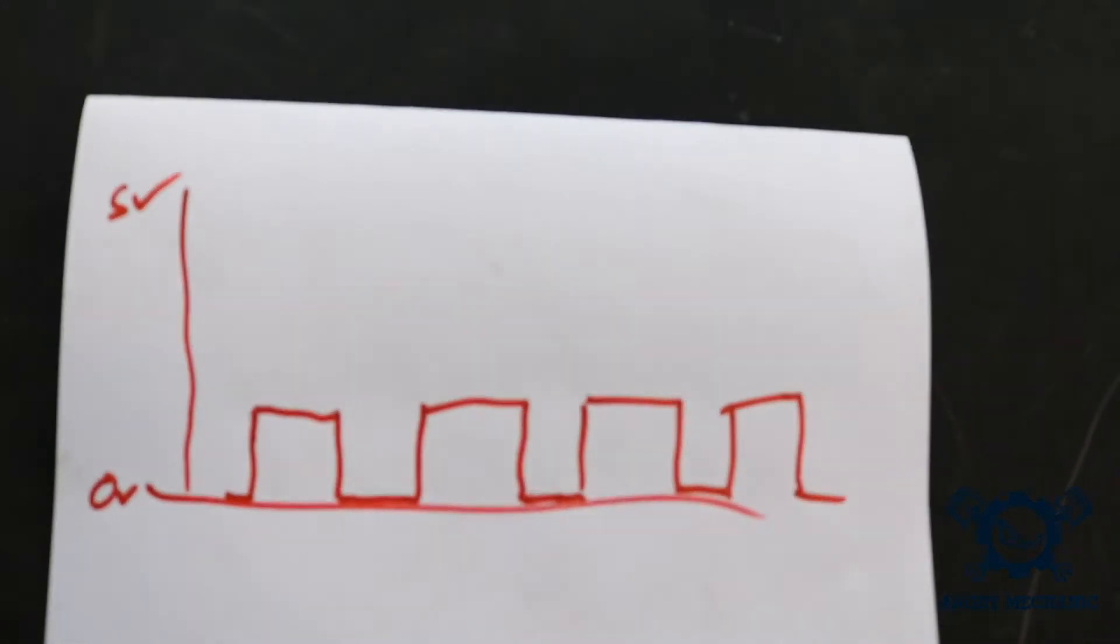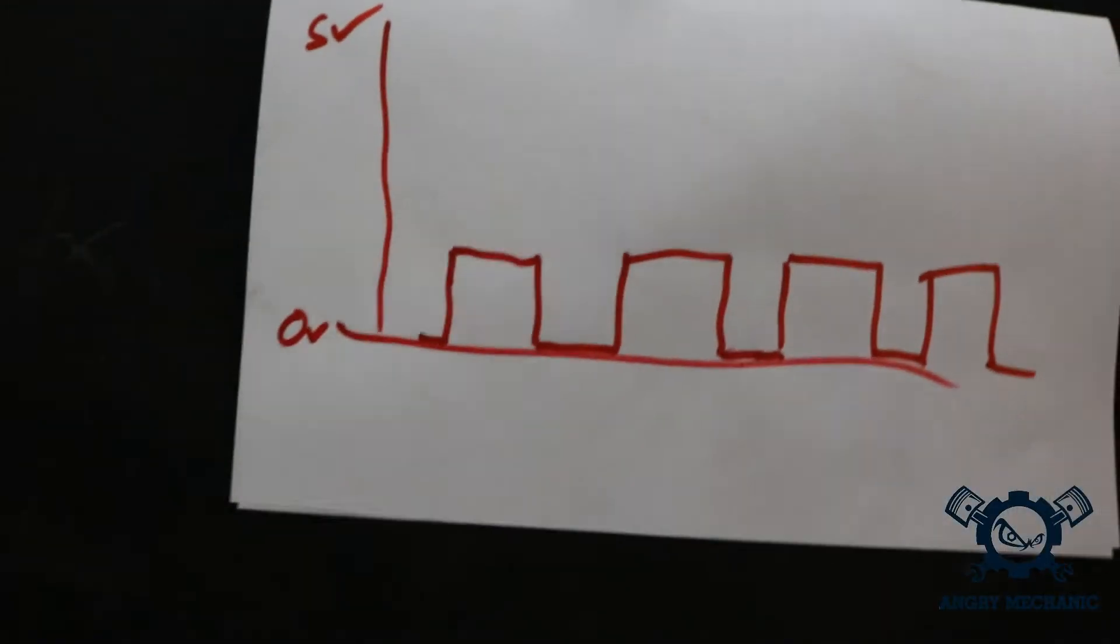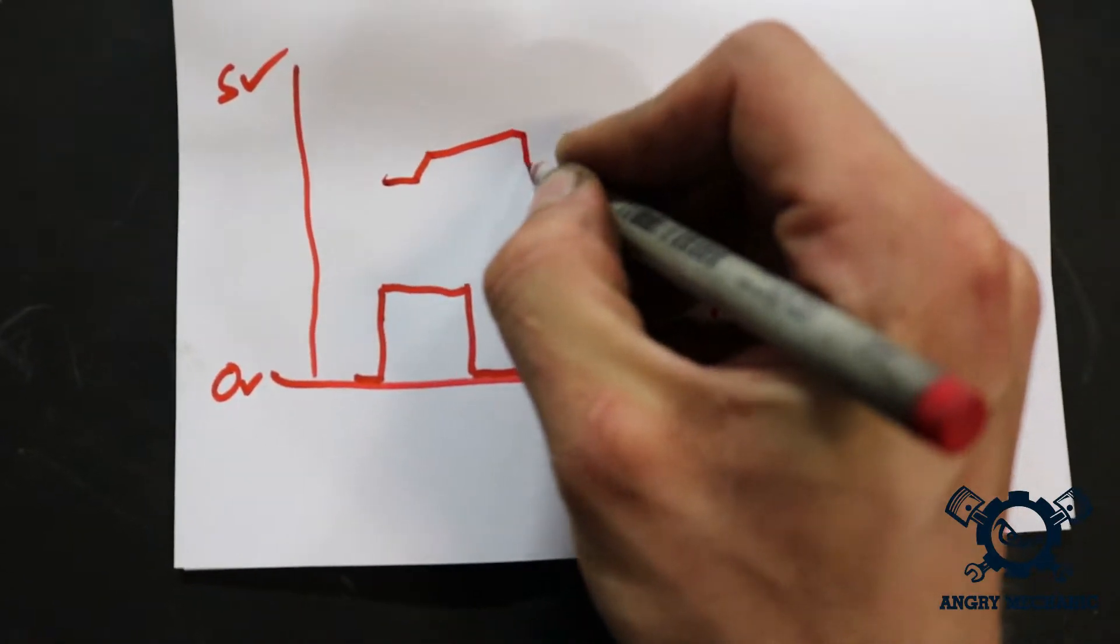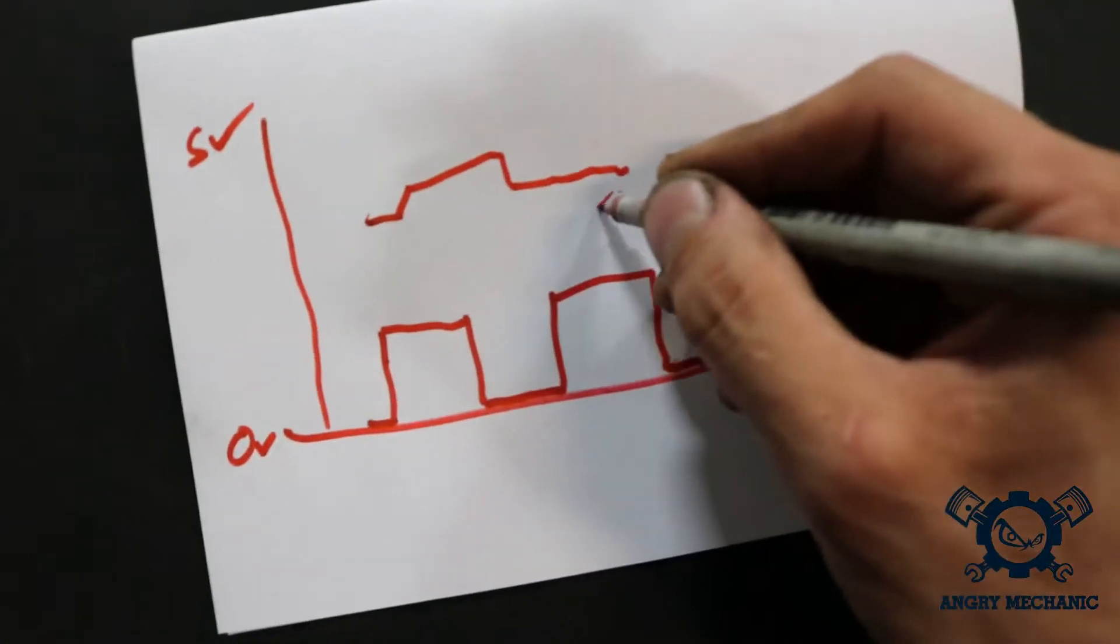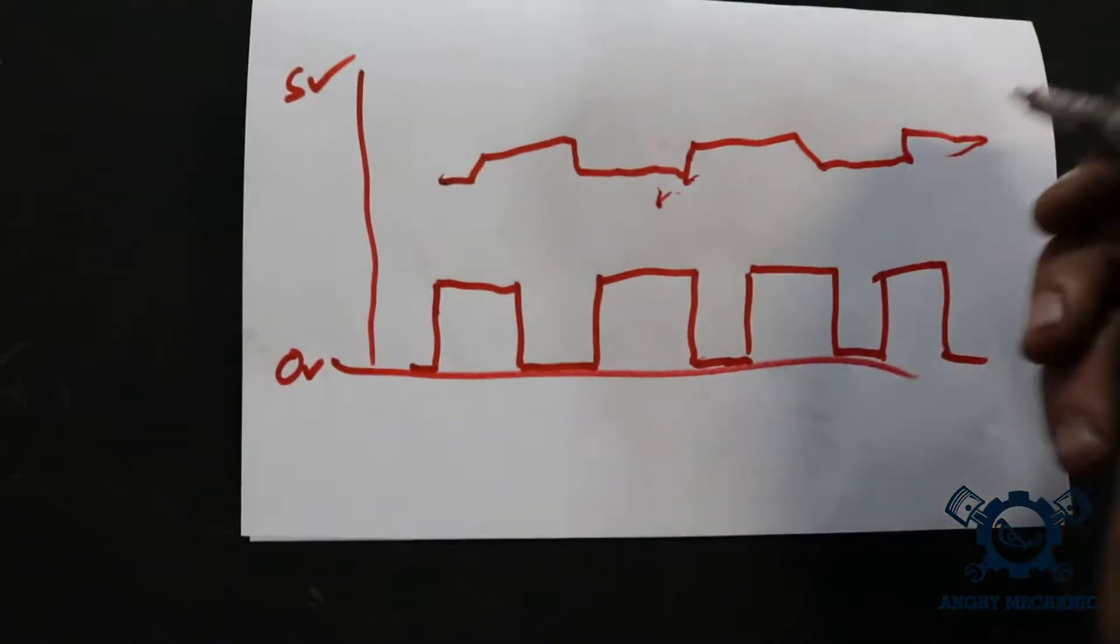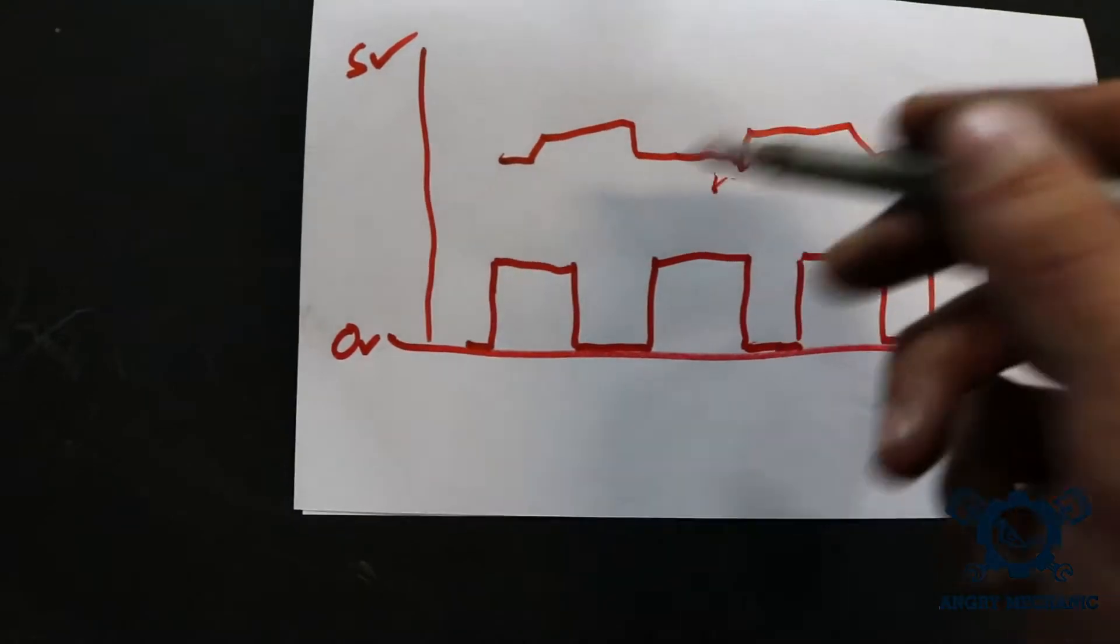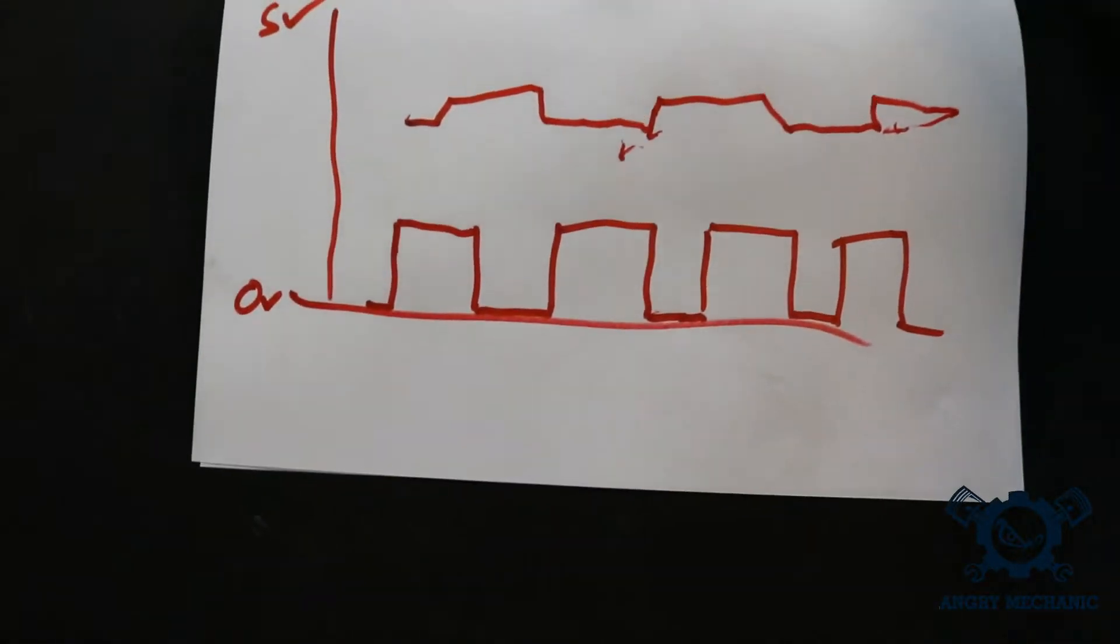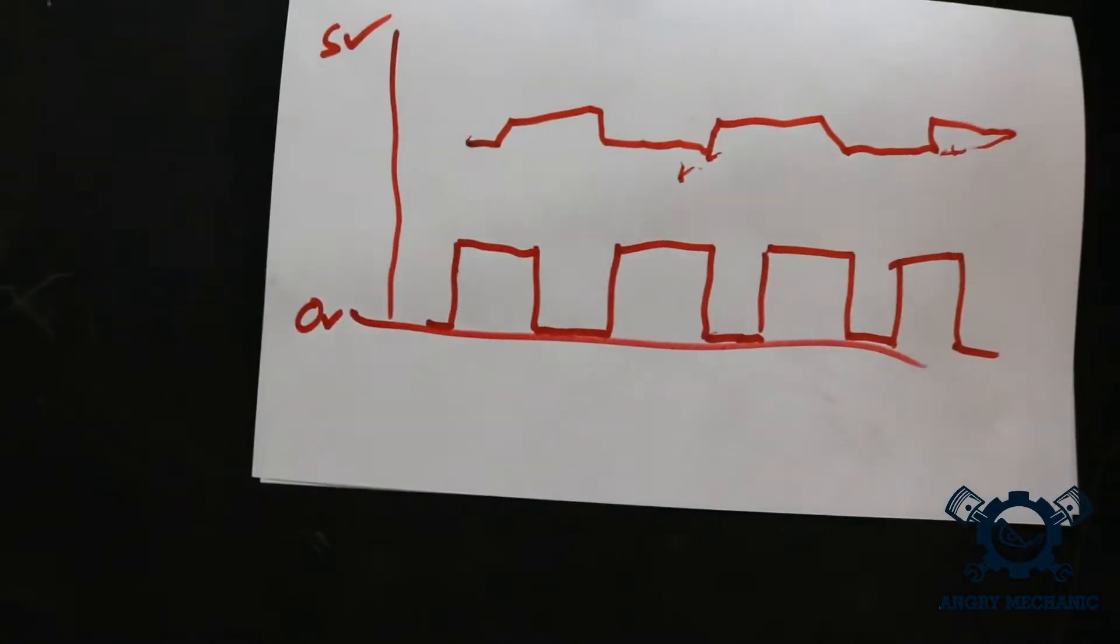If you run no pull-up on an open collector circuit, the signal will look more like something like this. Pardon my crude drawing again. The on and off won't be as pronounced. So you have to ensure it's running properly with the correct rated pull-up resistor.